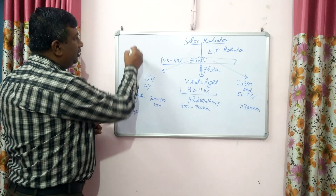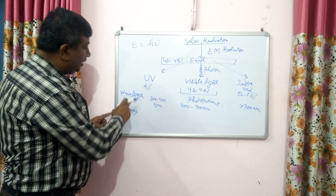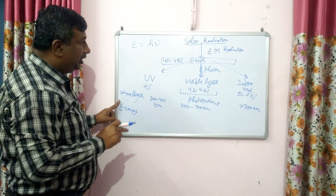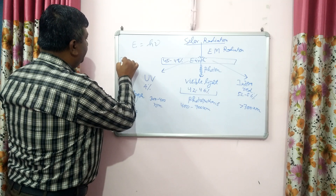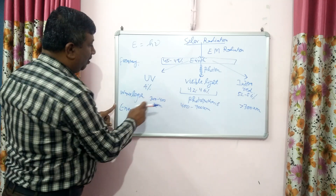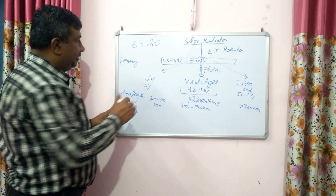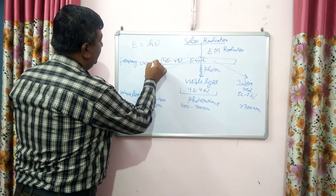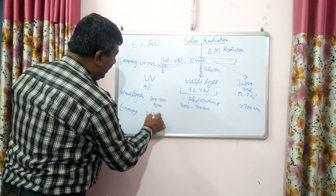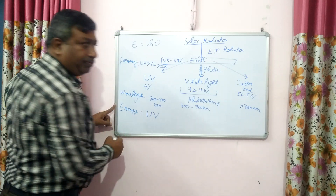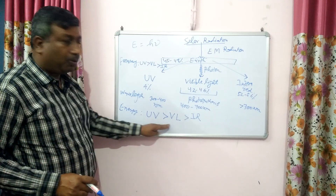The energy of a photon is given by E = hν, where E is the energy of the photon, h is Planck's constant, and ν (mu) is the frequency. Frequency is inversely related to wavelength: if wavelength is more, frequency is less, and if wavelength is less, frequency is high. So in order of decreasing frequency — and therefore decreasing energy — we have: UV light, then visible light, then infrared. So UV light has the most energy, followed by visible light, and infrared has the least.